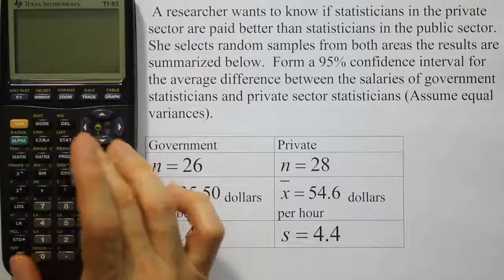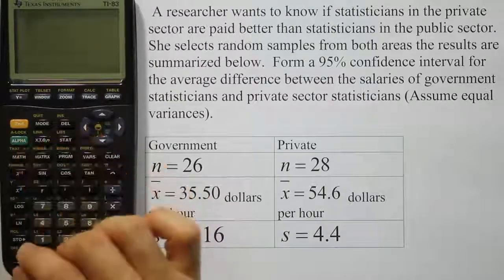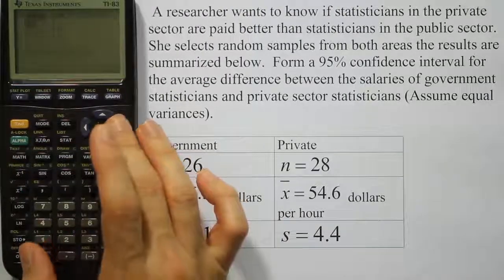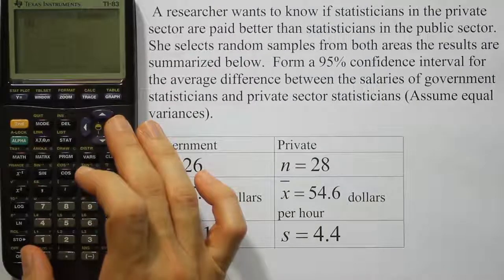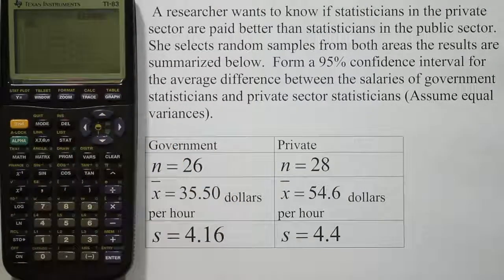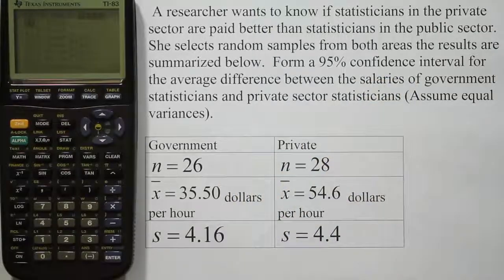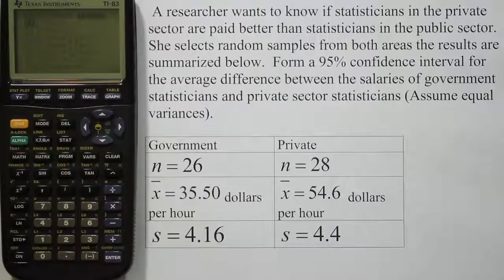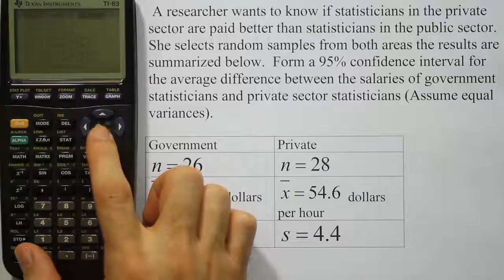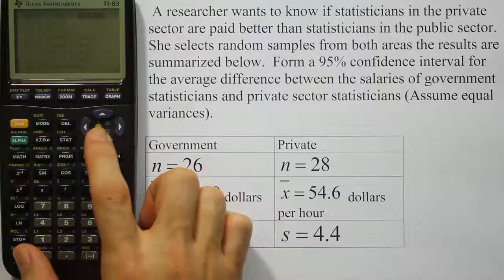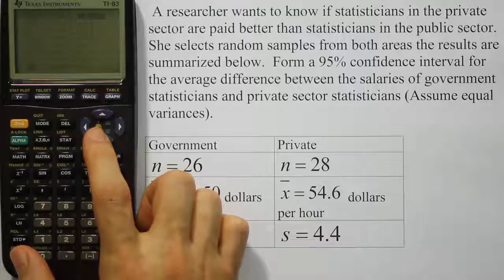We're going to turn on our calculator here. We'll press the stat key. Once you have the stat key up, you're going to arrow over to the right until you get to where it says calculate. Now we're going to look down the line for confidence intervals, but for two samples. And in this case, because they're small samples, we're going to be looking for the t-interval. So we'll scroll down this list until we see something that says two sample t-interval.